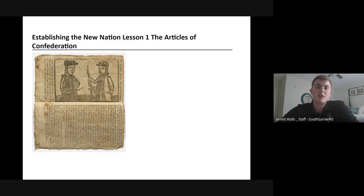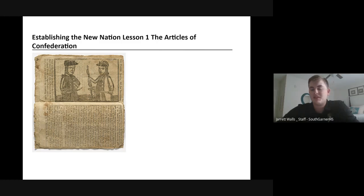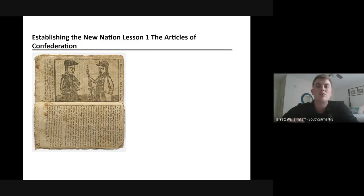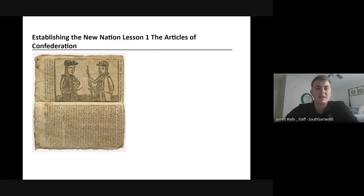You're probably familiar with the founding document, or what we consider the first document that governs the United States and sets up our system of government — the U.S. Constitution. However, the Constitution was not the actual first document laying out the role of the government in the lives of the American people. That would be the Articles of Confederation, which is what we're going to talk about today.